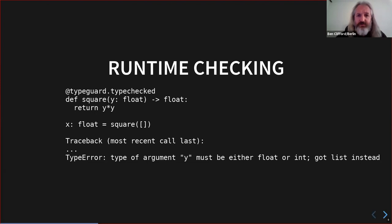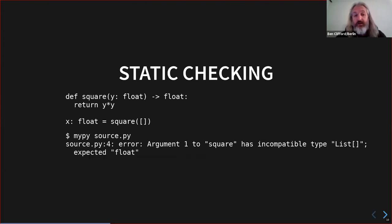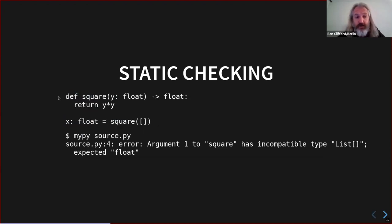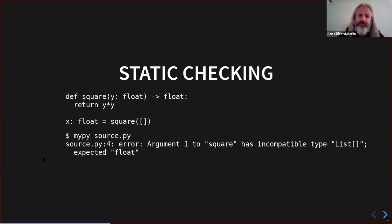The other thing we use is a tool called mypy — a static analyzer. If I put all of this in a source file and run `mypy source.py`, it doesn't try to run the code. It just does the type checking and tells me 'argument one to square: you gave me a list, I wanted a float.' That should look like pretty normal type checking — no surprises there to someone used to static checking.